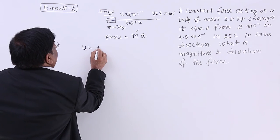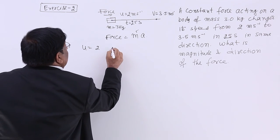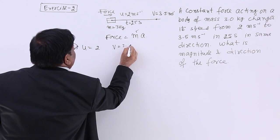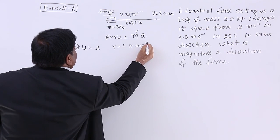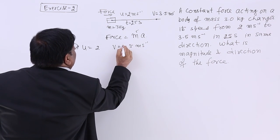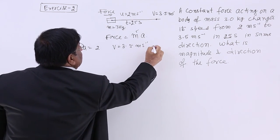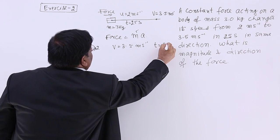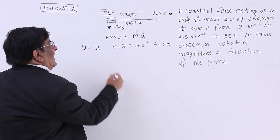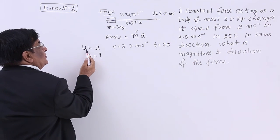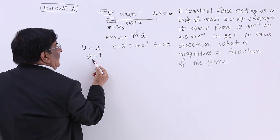U is given to us. U is equal to 2 meter per second. V is equal to 3.5 meter per second. And time is also given to us. Time T is equal to 25. And we have to find out acceleration. U, V, T, A.